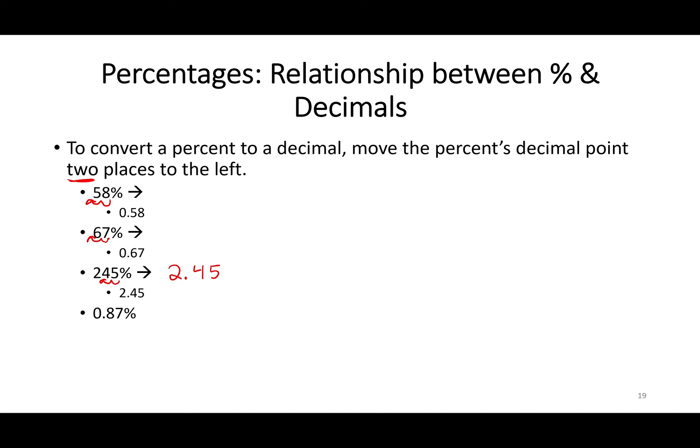0.87%. I see a decimal point. I'm moving it one, two spaces to the left. You notice how here there's an empty space? Make it a zero. This becomes 0.0087.